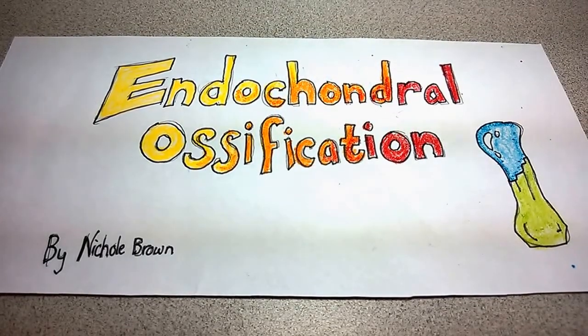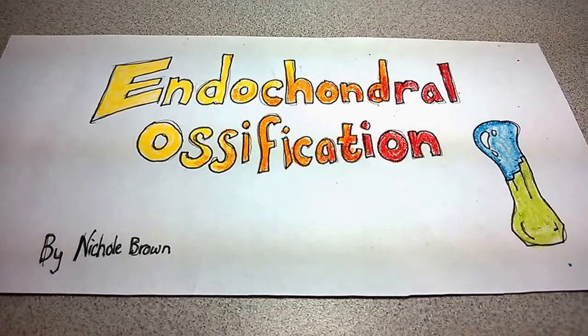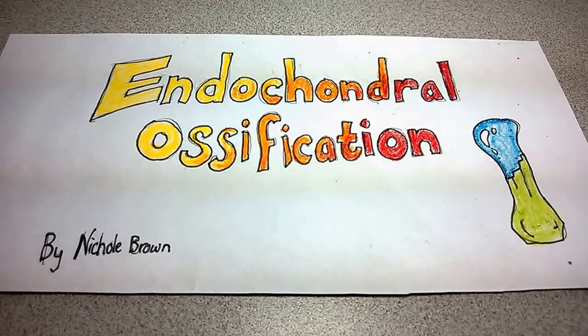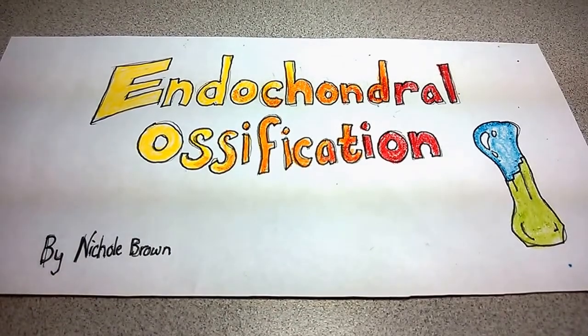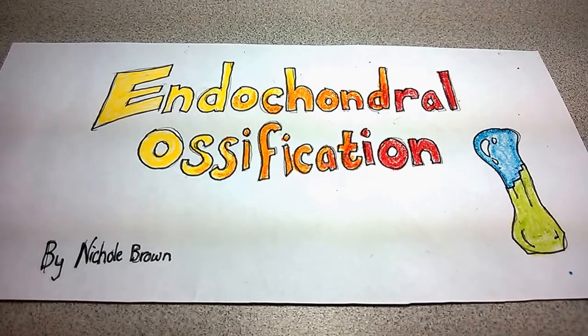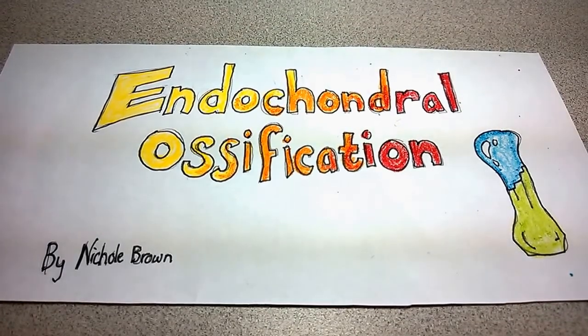A child's bones in the beginning of life are completely made of hyaline cartilage. As they grow, bone slowly replaces the cartilage. This process is called endochondral ossification. In this video, we will be looking at the femur of a baby as it grows into puberty. This process is divided into seven steps.